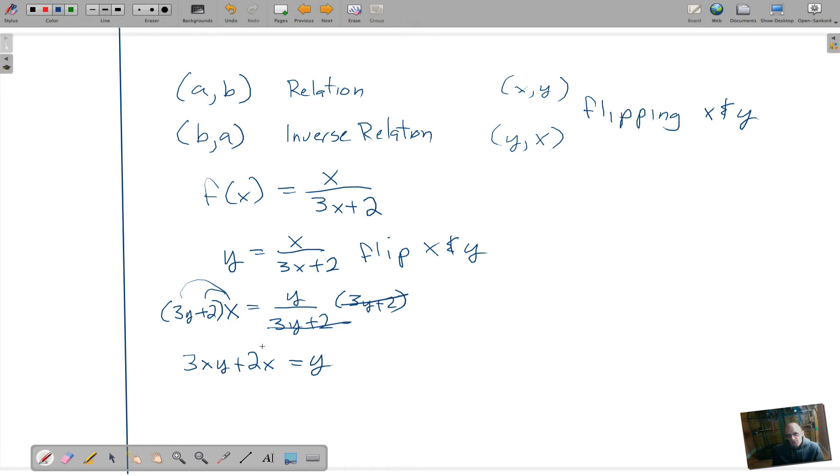You get 3xy plus 2x equals y. Then since we're going to solve for y, let's bring all the y's over to one side and all the x's to the other. So we subtract 2x on both sides and then subtract the y on both sides. So we get 3xy minus y equals negative 2x.